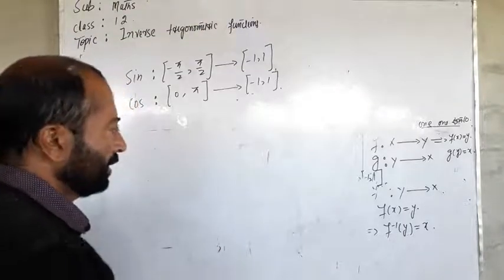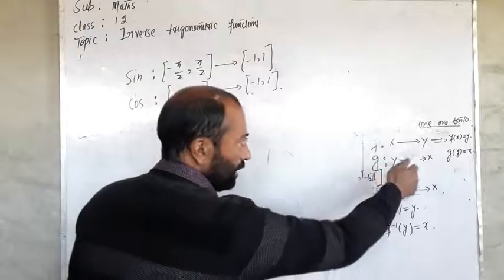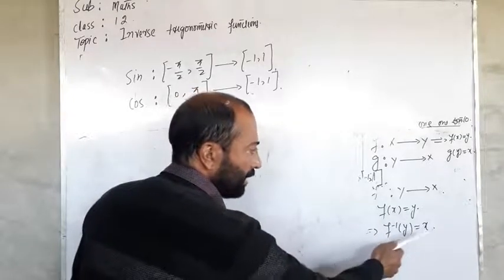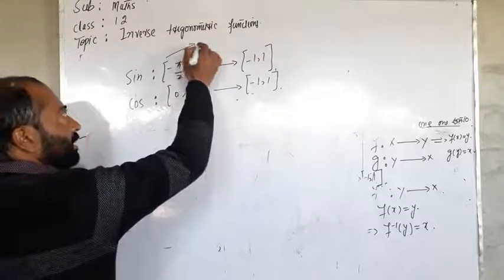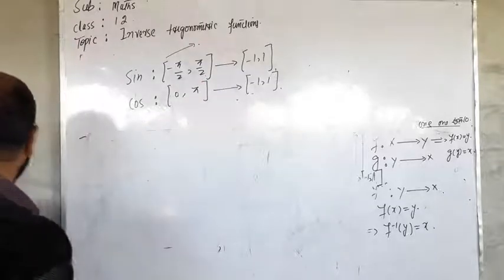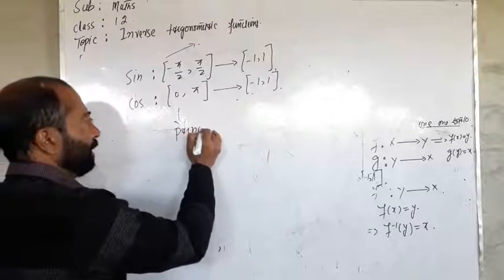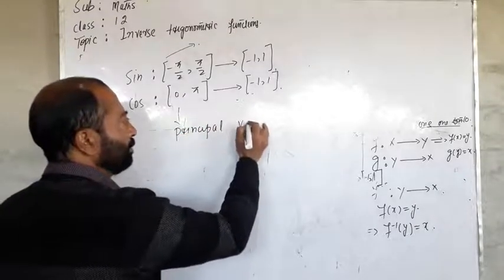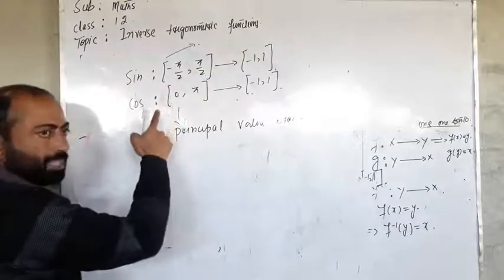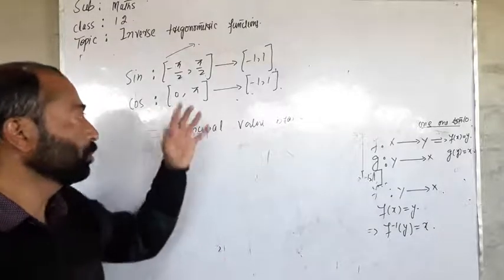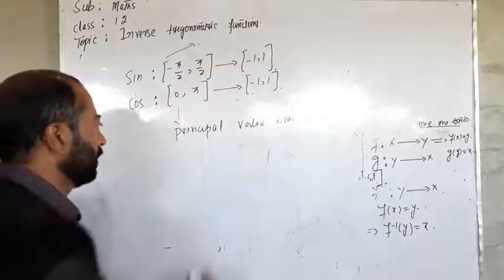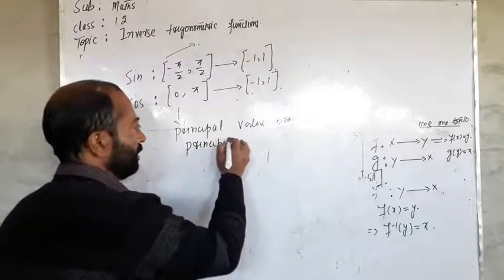For sine, the restricted domain is [−π/2, π/2] mapping to [−1, 1]. For cosine, it is [0, π] mapping to [−1, 1]. In these intervals, sine and cosine functions are invertible. As a function is invertible if it is one-one and onto, f(x) = y implies f⁻¹(y) = x. The intervals [−π/2, π/2] and [0, π] are known as the principal value branches for the sine and cosine functions, and values obtained in these branches are called principal values.